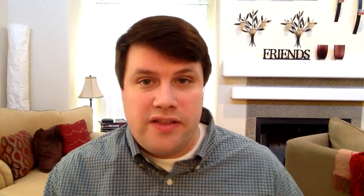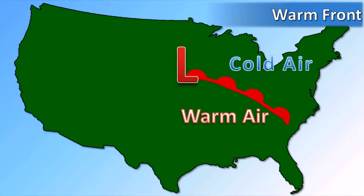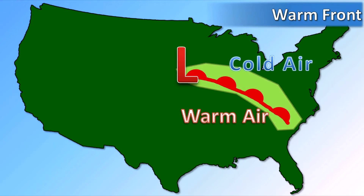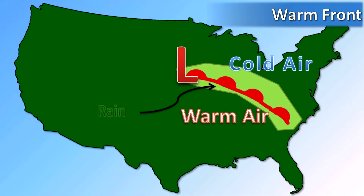A warm front, as you would expect, is the opposite of a cold front. It has warm air behind the line and cold air ahead of the line. It's shown on a weather map as a red line with semicircles pointing in the direction the front is moving. When this front passes, you'll usually experience cloudy skies, breezy conditions, and steady rain or snow. On occasion you can also get severe storms, but they aren't as frequent as the storms you get with a cold front. You'll also notice the air begin to warm as the boundary moves away from you.